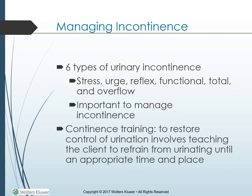Managing incontinence: urinary incontinence may be permanent or temporary. The six types are stress, urge, reflex, functional, total, and overflow. Management is complex and further complicated when clients have more than one type — for example, stress incontinence often accompanies urge incontinence. Some forms respond to simple measures like modifying clothing; others require a regimented approach like continence training. Inserting a retention catheter is the least desirable approach to managing incontinence because it is the leading cause of urinary tract infections in hospitals and nursing homes.